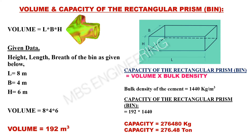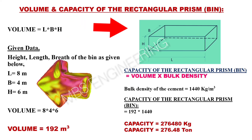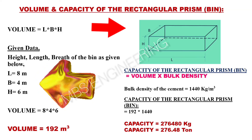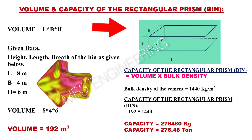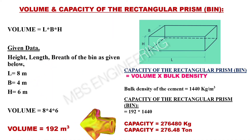Next, we learn about how to calculate the volume and capacity of the rectangular prism or bin. The volume calculation formula for rectangular prism or bin is L × B × H. Please refer to the rectangular prism or bin snaps and given data. L is 8 meters, B is 4 meters, H is 6 meters. Based on the above equation and given data, the volume of the rectangular prism or bin is 192 cubic meters.